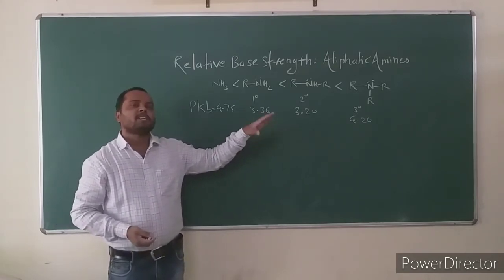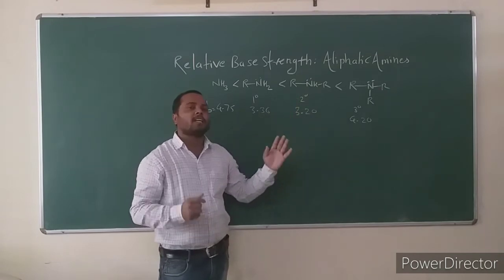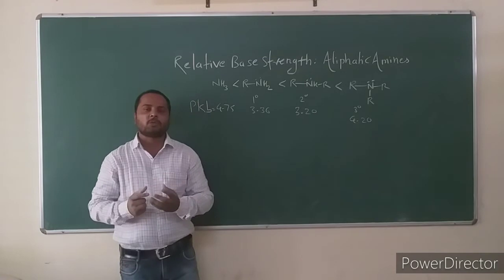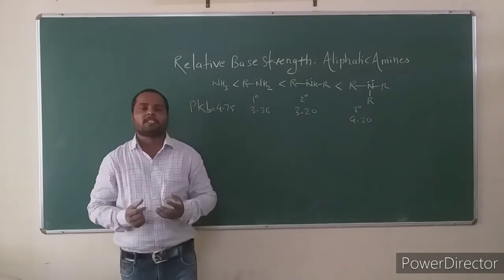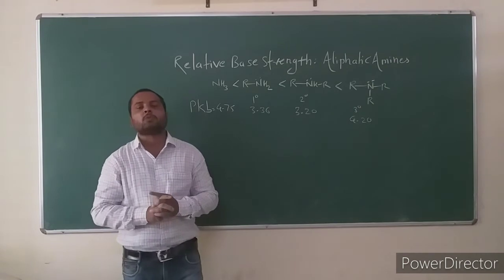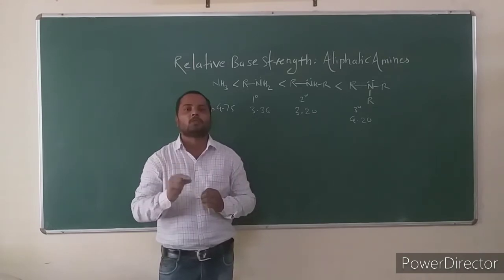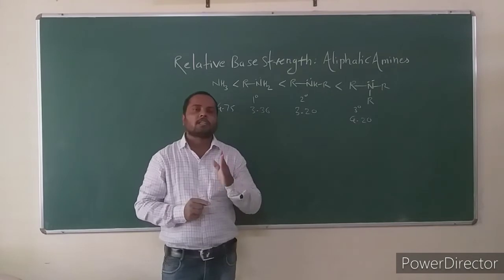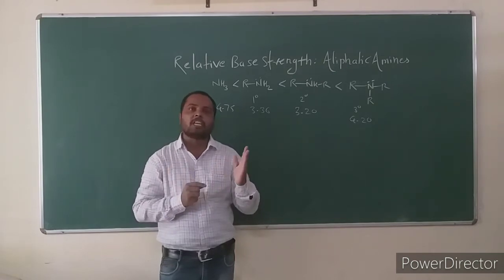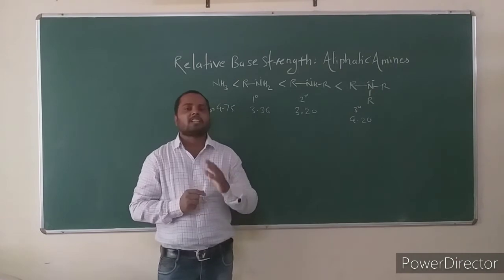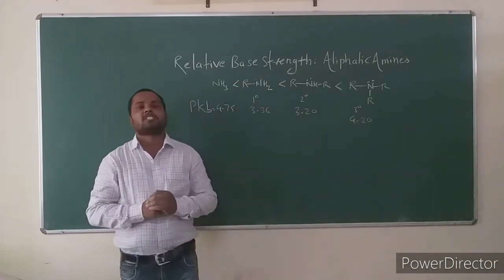These are the aliphatic amines — primary, secondary, and tertiary — in which the nitrogen atom has aliphatic (alkyl) groups attached. These are saturated sp³ carbon groups. According to the structural effect, the +I effect (electron-donating inductive effect) and +R effect (electron-donating resonance effect) both increase base strength, because they increase electron density around nitrogen, increasing availability of the electron pair.